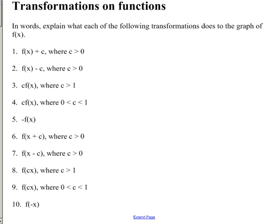When we have a function f of x — remember, f of x is our y — if I take f of x plus c, if I add outside my function and c is positive, this is going to shift my graph up c units. Because I'm taking my old y and adding c, so for any given x, the new y is going to be c many units above the old y. Similarly, if I subtract c and c is positive, I'm going to shift down c units.